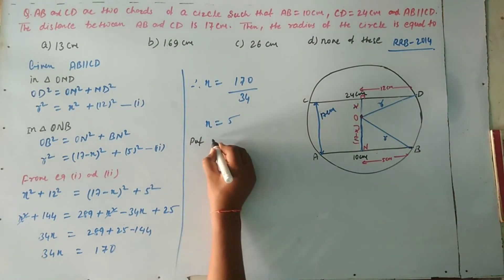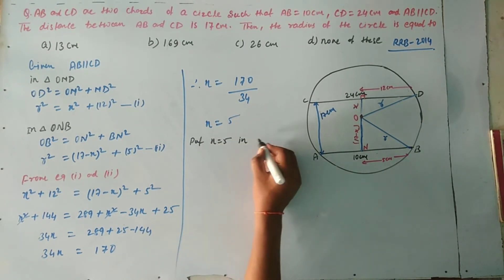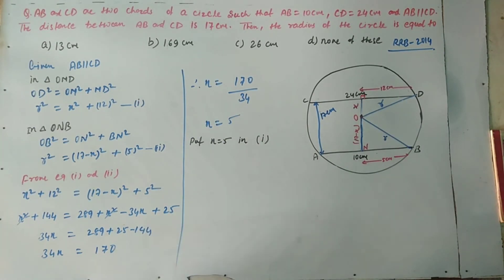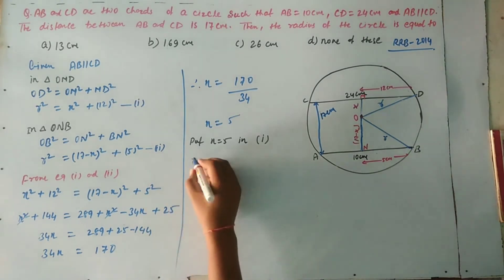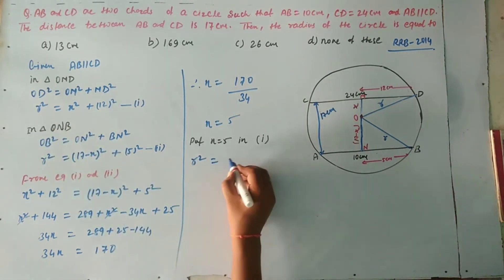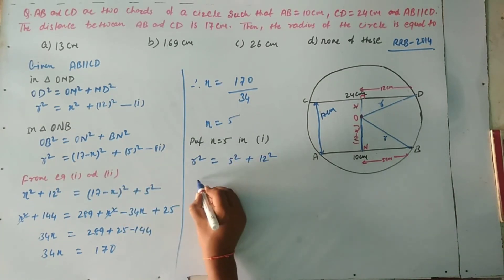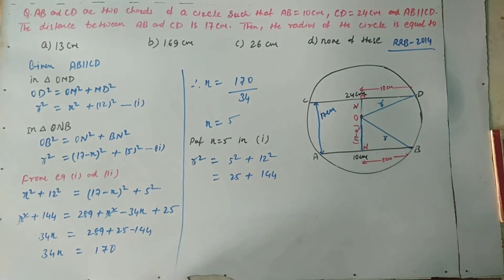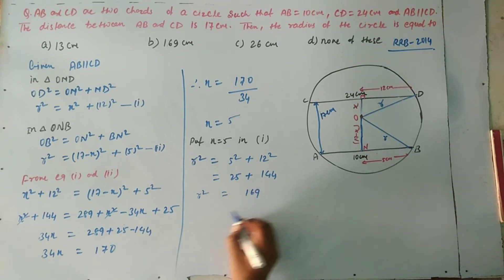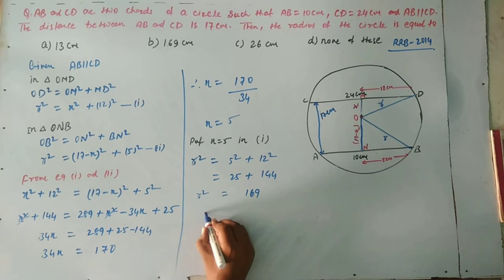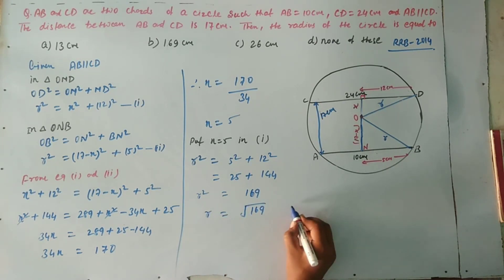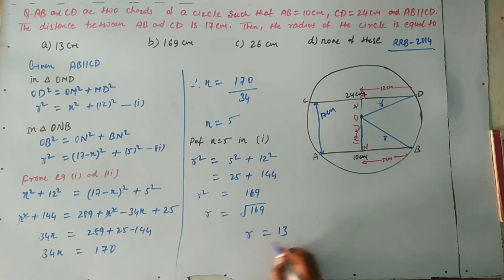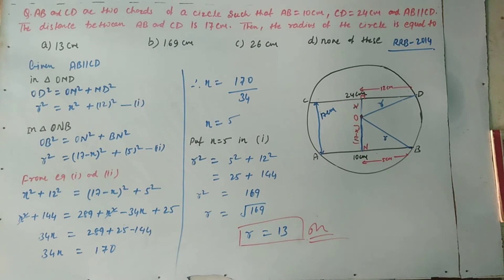हमें find करना है radius of circle यानि कि R। Put x = 5 in Equation 1: r² = 5² + 12² = 25 + 144 = 169. Therefore r = √169 = 13. 169 किसका square है? 13 का। तो इसलिए r हमारा answer है 13 — circle का radius 13 होगा।